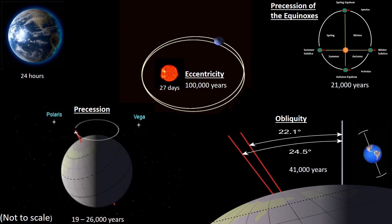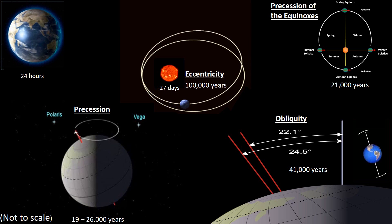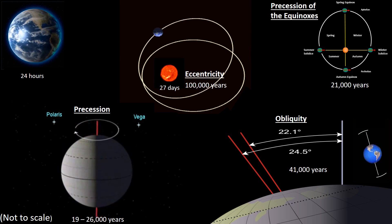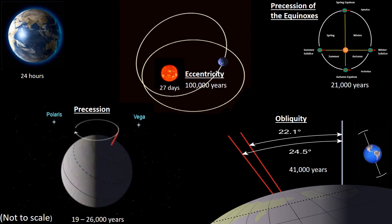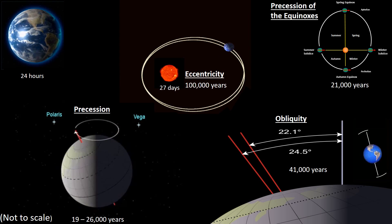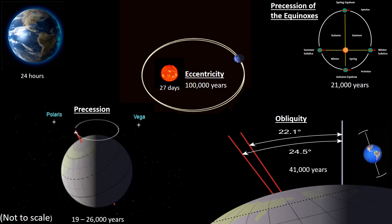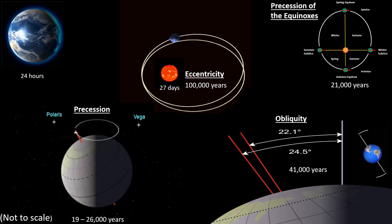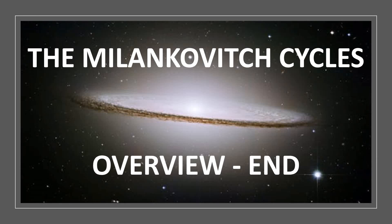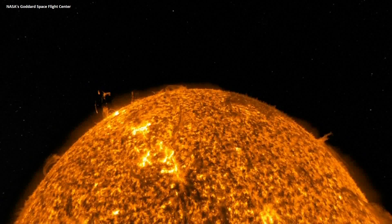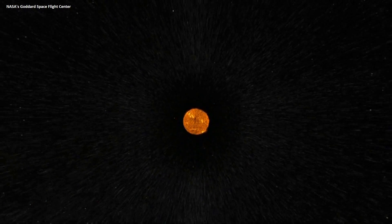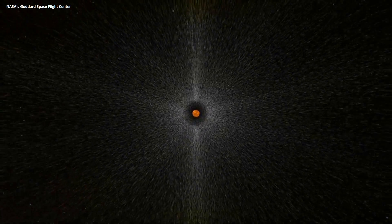The combined effects cause the seasons to gradually cycle relative to the perihelion and aphelion, over a time span of about 21,000 years.